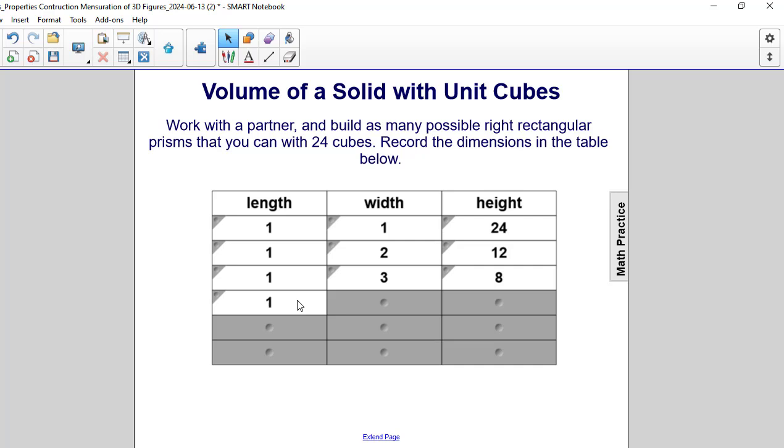Yet another option would be if I have one cube going across, I go back four cubes, and stack it so that I have six layers. That also is another way to arrange 24 cubes so that I have a rectangular prism. If I multiply one times four times six, that also gives me 24.